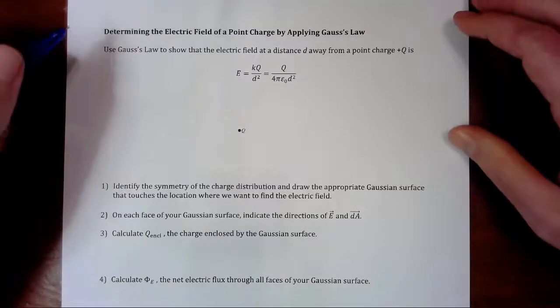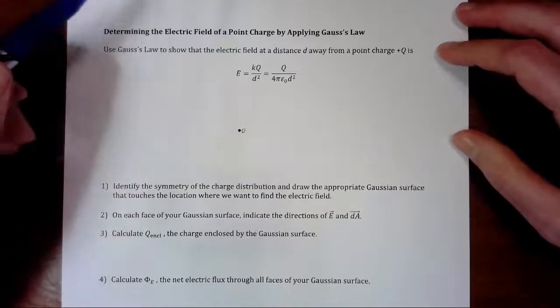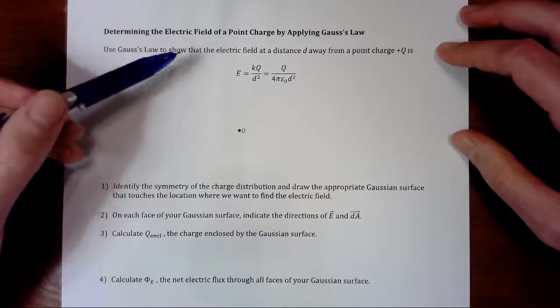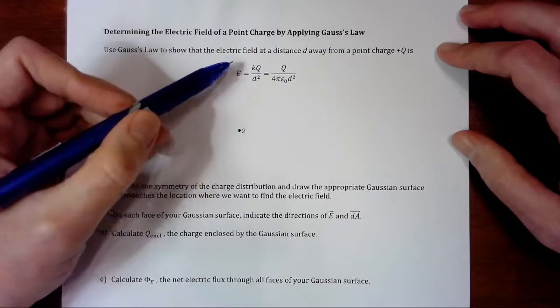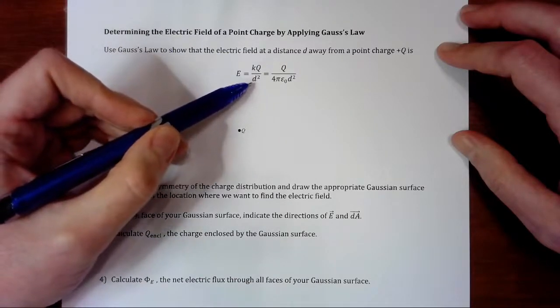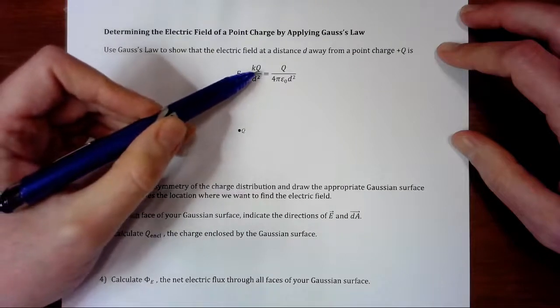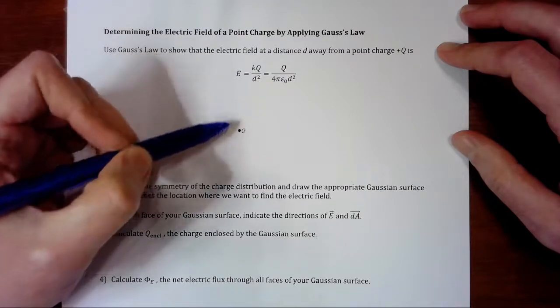In this video we are going to use Gauss's law to show that the electric field due to a point charge is our usual kq over r squared, or in this case kq over d squared, because I'm going to say we're distance d away.